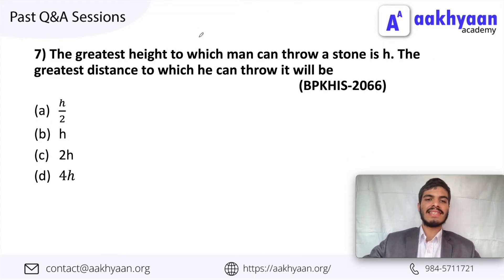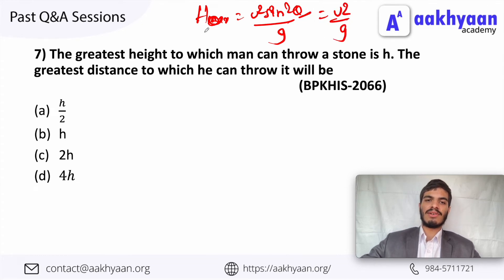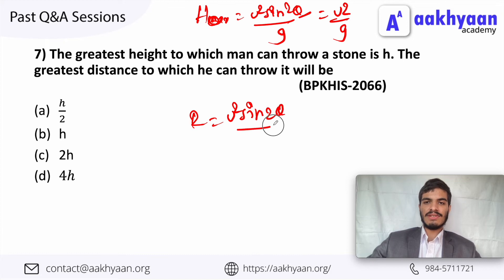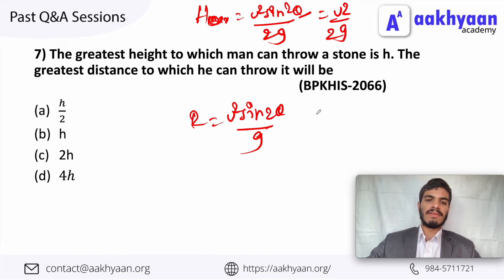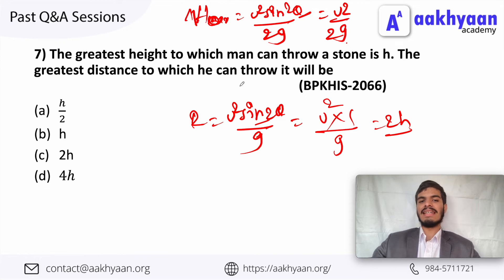In the next question, the greatest height to which a man can throw a stone is H. So H equals u squared sin squared theta divided by 2g, and maximum H equals u squared divided by 2g. The greatest horizontal distance to which he can throw is the maximum range. The maximum range equals u squared divided by g, which is 2H. So 2H is the correct option.